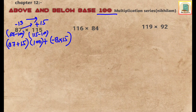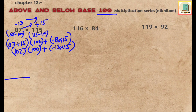Now 87 plus 15 gives 102, multiplied by 100. For 13 multiplied by 15, we cannot do it directly, so we will use the above base 10 method to solve this.